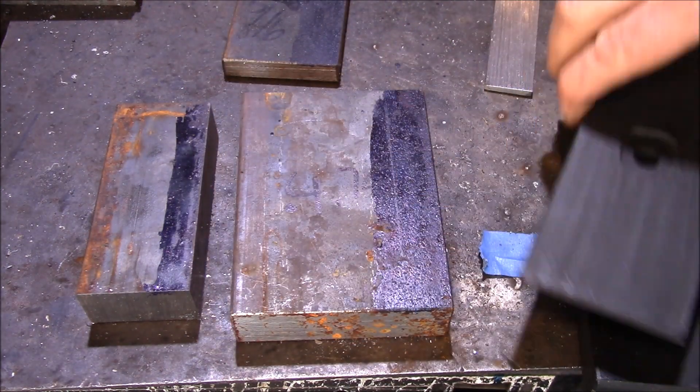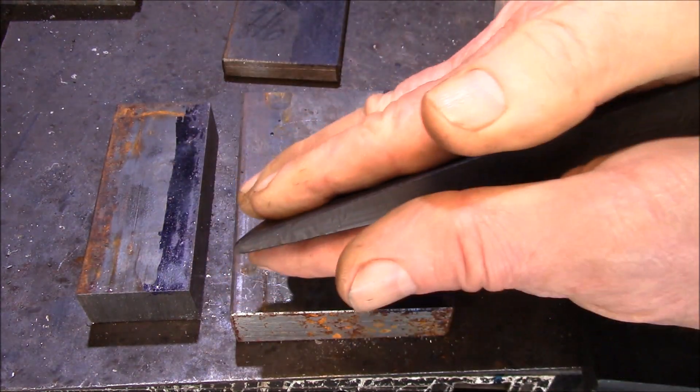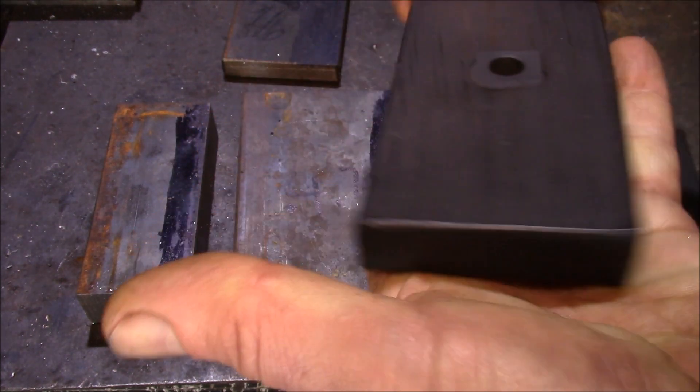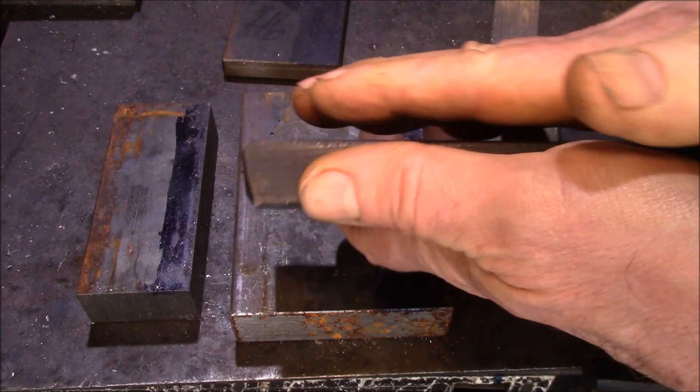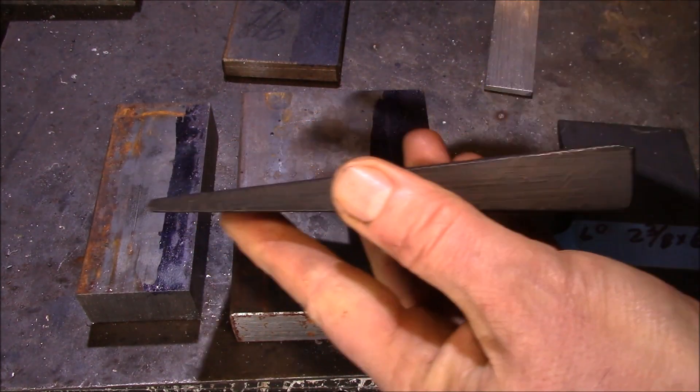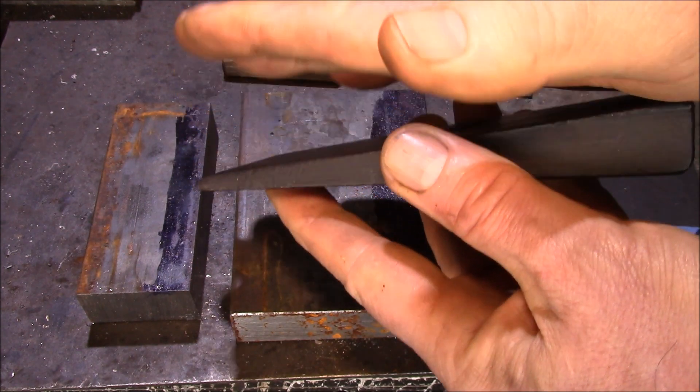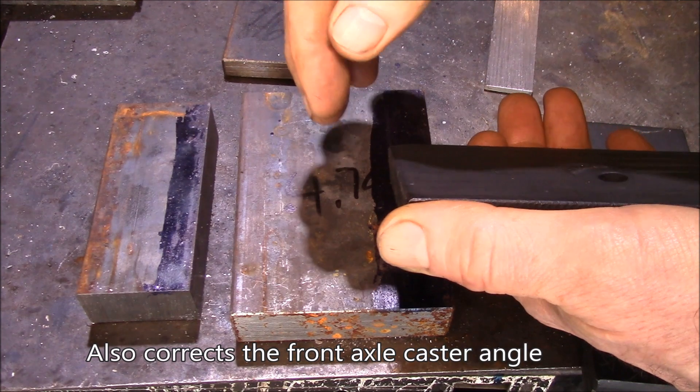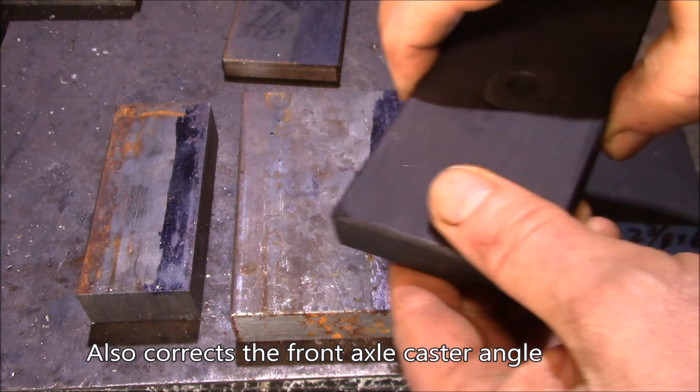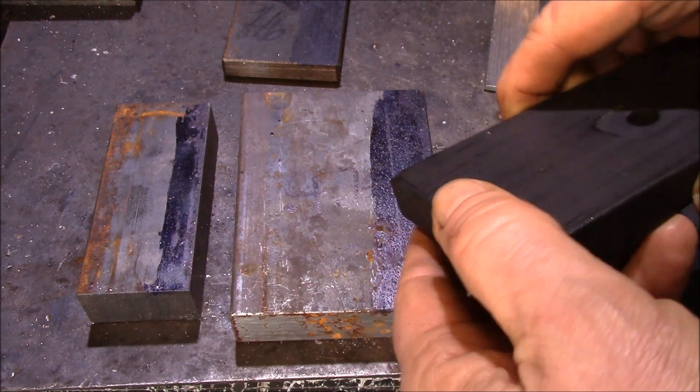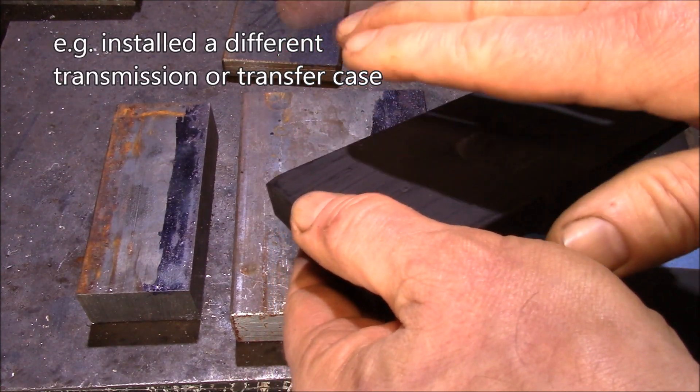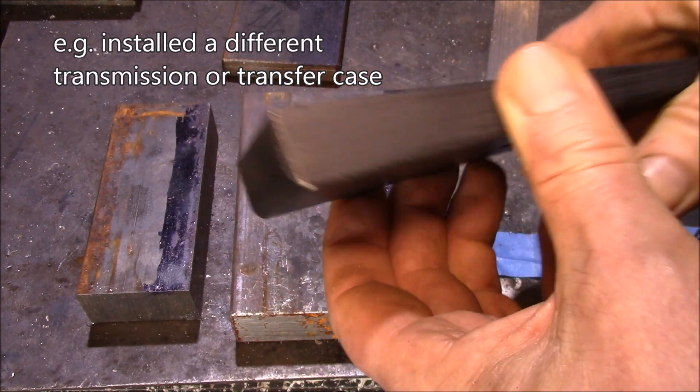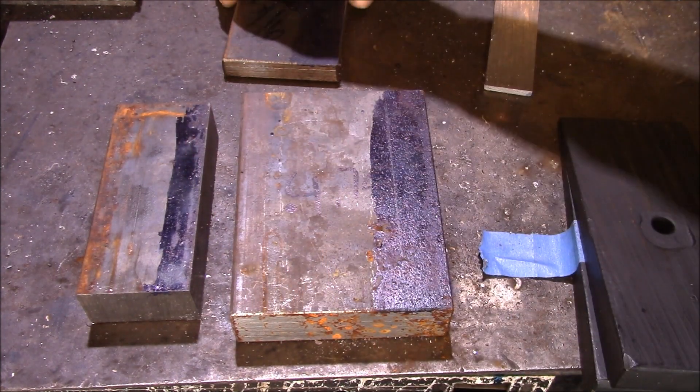What the shims do is they change the angle of your axle relative to the leaf springs. And depending on which way you install the shim and how steep it is, you can tip your axle up or down. And what that does is it corrects the alignment on your drive shaft. So if you've installed a suspension lift or done something to the suspension, any number of things can cause the angle to be off. So you may need to install a shim to correct the pinion angle.